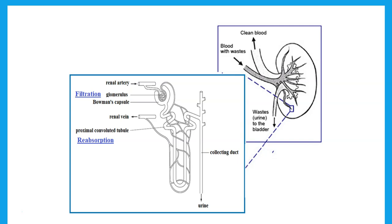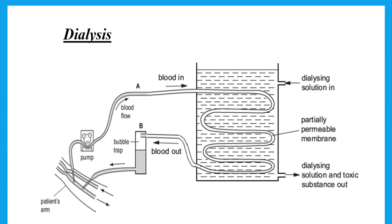So, what if the kidneys do not work? So, if someone's kidneys do not work, first of all, we have two kidneys. If one of them does not work, that's okay because the other one will do the job. But if both kidneys are not working, then this person has to go through a process called dialysis.